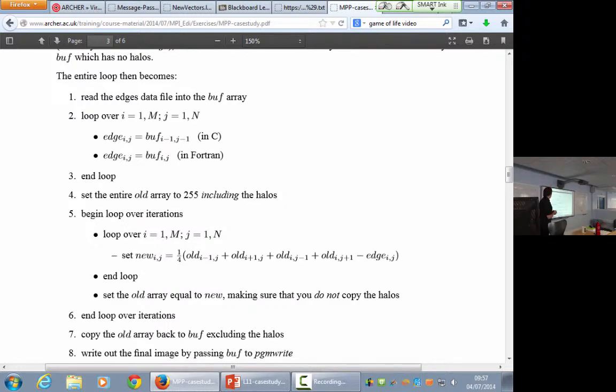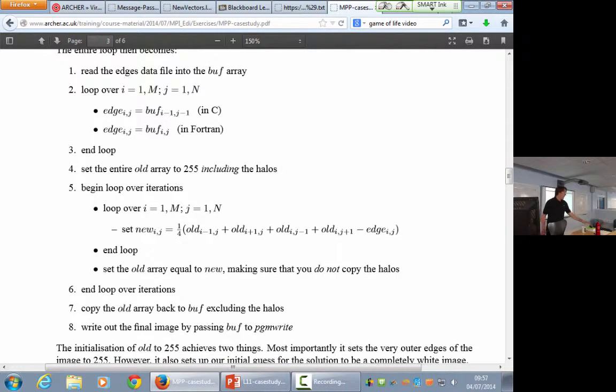The only annoying thing for C programmers is, this is inevitable when you have halos, that these loops, when I say loop over I equals 1 to M, I mean 1 to M. I don't mean I equals 0 I less than M. I don't mean I equals 1 I less than M. I mean 1 to M. C programmers always forget to include the upper limit.